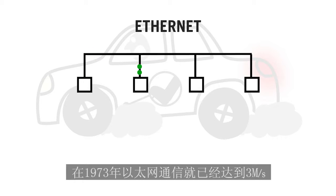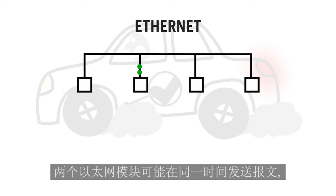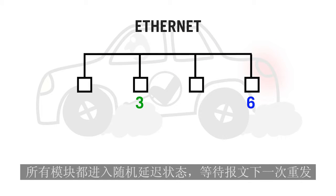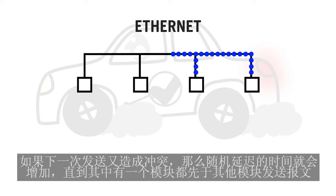By 1973, Ethernet was already running at 3 Mbit per second. Today Ethernet supports speeds of 10, 100, and even 1000 Mbit per second. There is a certain probability that two units will start sending an Ethernet frame at the same time. This will result in a collision, and the sending process will stop. All units wait a random delay time before they restart sending. If, after such a delay, collisions still occur, the random delay time is increased until one unit starts sending before all other units.